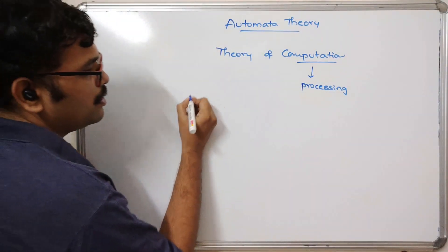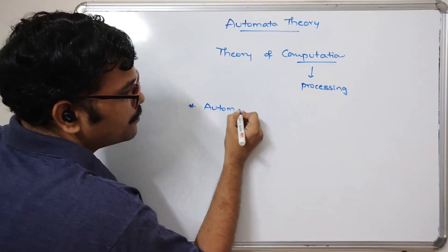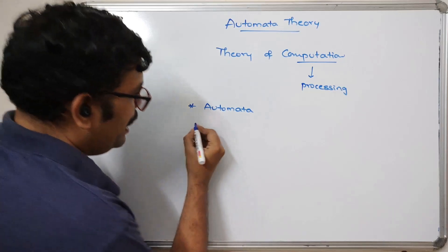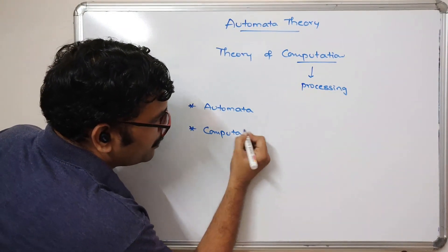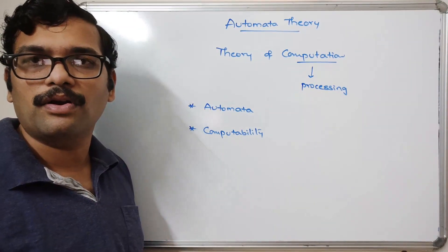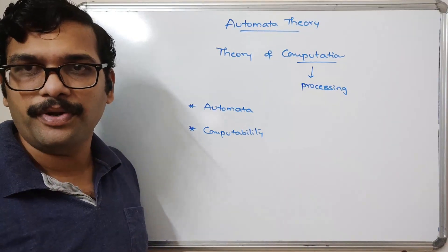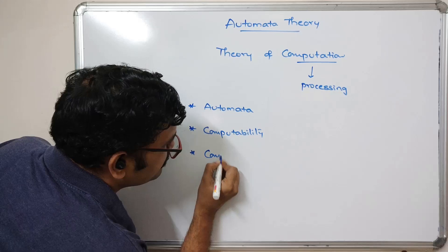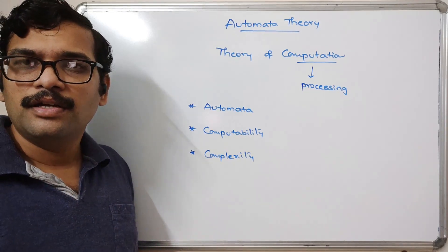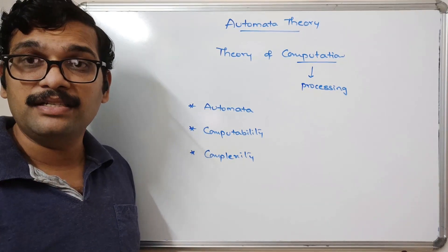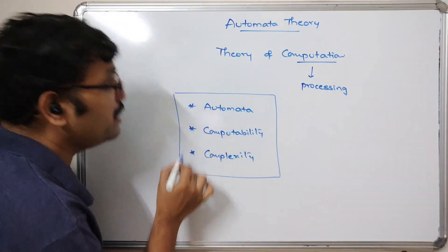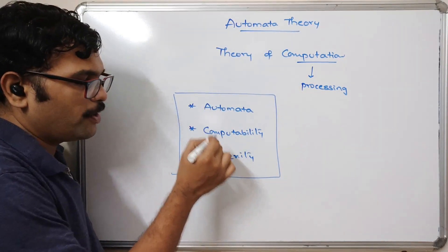Automata theory mainly covers three core concepts. The first is automata — developing a model that takes input, processes it, and gives output. The second is computability — whether the machine can accept and process the input, checking the ability of computing. The third is complexity — for every problem there are multiple solutions, and we need to select the optimal solution with the least complexity.